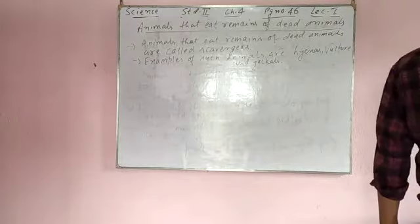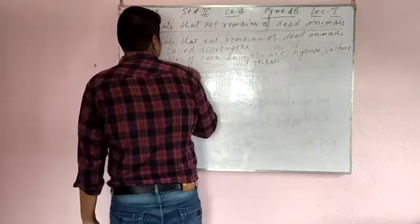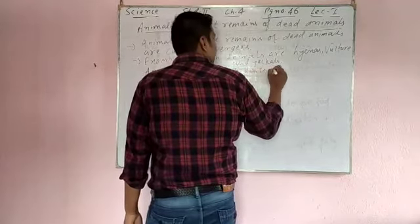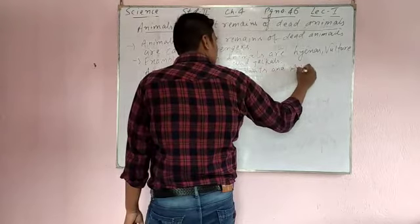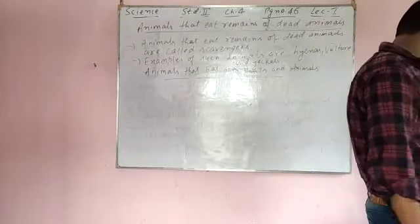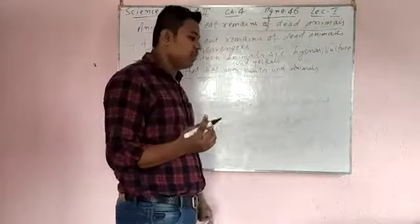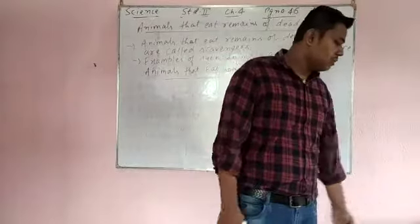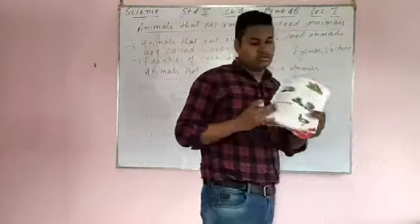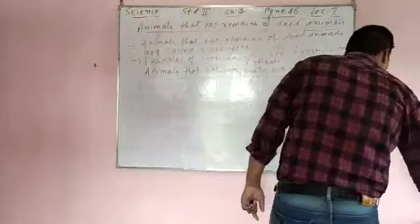The next topic is animals that eat both plants and animals. Some animals eat both plants and animals. For example, rats and bears — bears eat parts of a plant, and bears also eat fish. You can see the pictures in your book. Bears eat parts of plants and also eat the flesh of other animals.